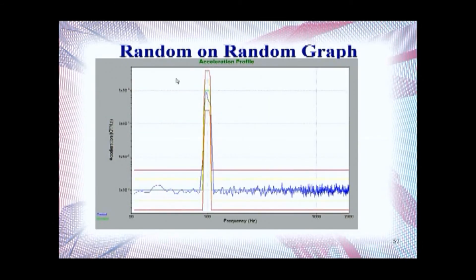Here is an example of a Random on Random vibration graph. Once again, the vertical axis is expressed in power spectral density, and the horizontal axis is expressed in frequency. Here you have your base random vibration curve, which is a flat line, and up here you have your fixed bandwidth random vibration, which is superimposed on top of the random vibration base.